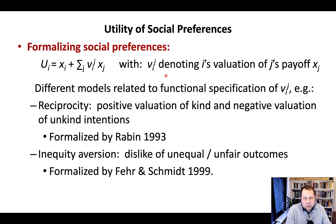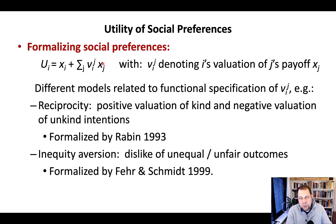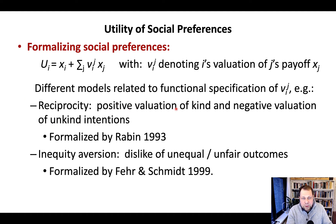The term v_i denotes person i's valuation of j's payoff x_j. This valuation can be positive or negative — in a competitive environment it might be negative, whereas in a cooperative environment it might be positive. In a reciprocity model, we value positively any kind action of the other person and assign negative valuation to unkind intentions. This was formalized in the model by Rabin in 1993.